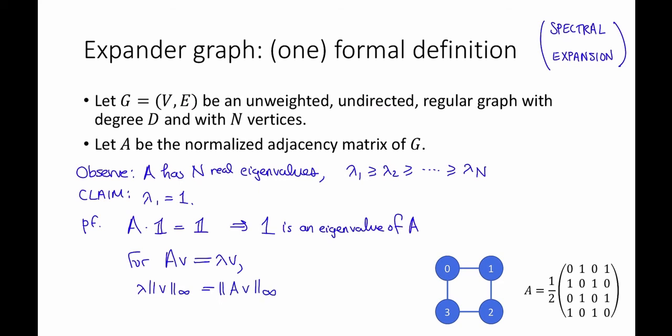But the L infinity norm of A times V is at most the L infinity norm of V. Once again, because all of the rows of A have non-negative entries that sum to one. So if I cancel the L infinity norm of V from both sides here, I get that lambda is at most one.